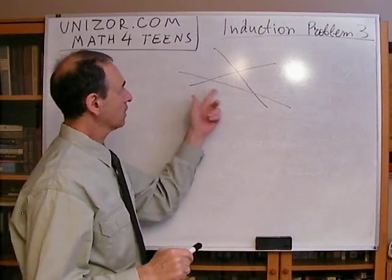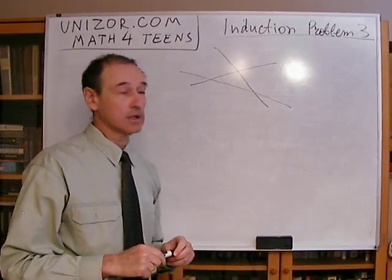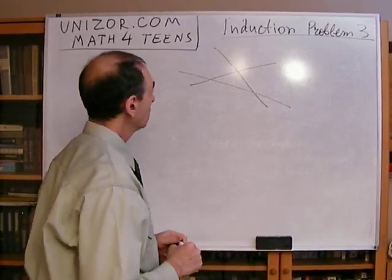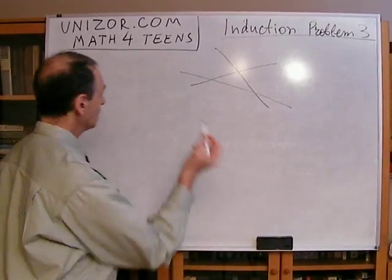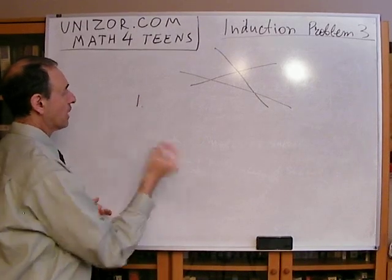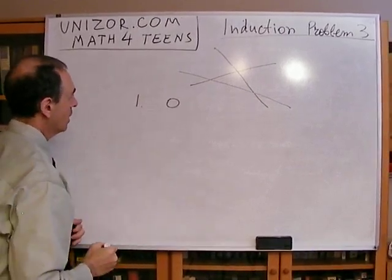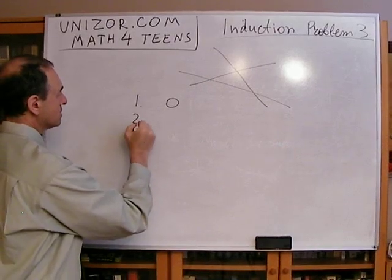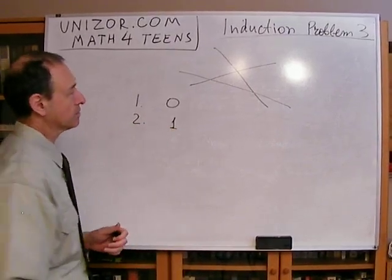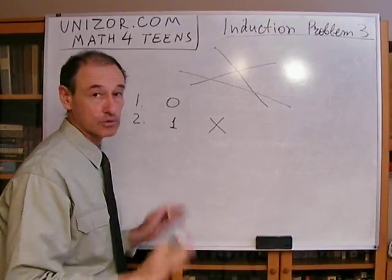The question is: how many crossing points do we have in the case of n lines? In the case of one line, obviously we have no crossings. In the case of two lines, we have only one crossing — two lines cross in only one point, since there are no parallels.